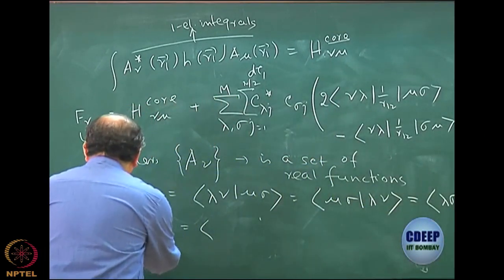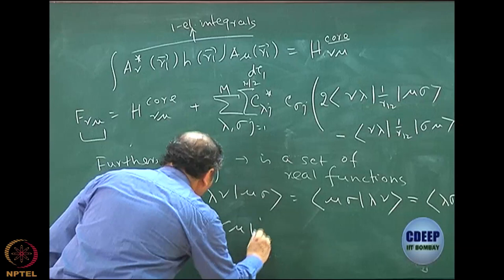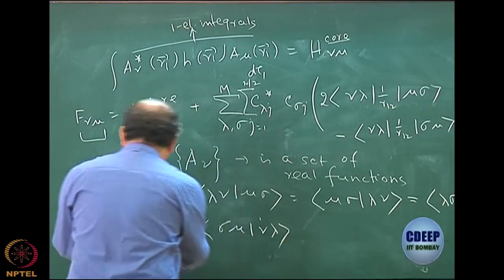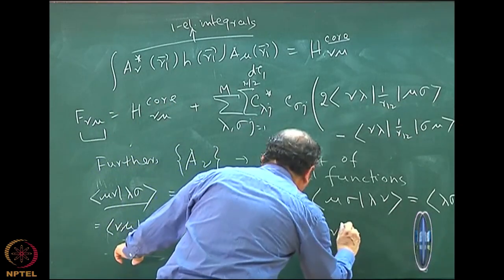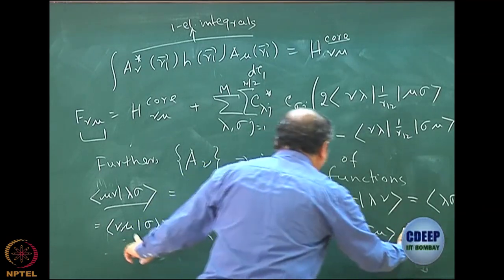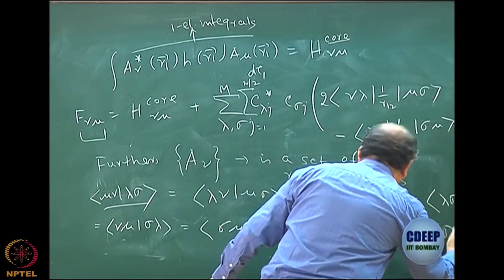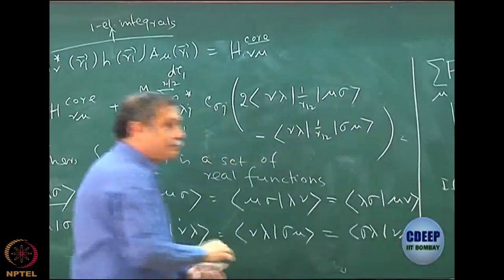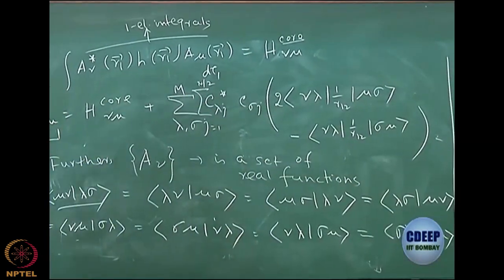Once I can write this, I can write further permutations for the real functions using the same set. That means interchange now to get (sigma mu | nu lambda), interchange again to get (nu lambda | sigma mu), interchange both to get (sigma lambda | nu mu). So in shorthand the full set of symmetry-related integrals arises by combining the real-function interchanges with the dummy-variable interchange.